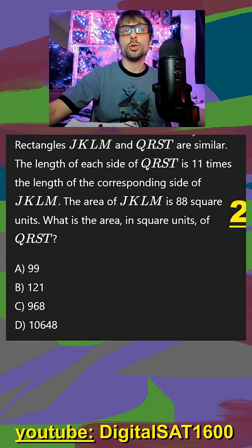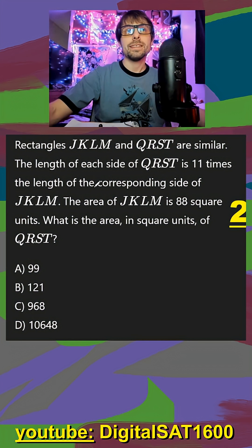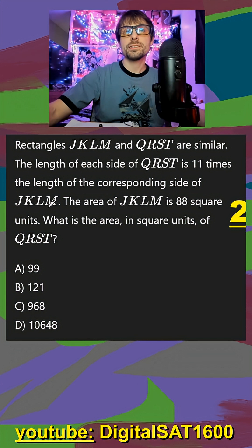Rectangles J and Q are similar. The length of each side of the Q rectangle is 11 times the length of the corresponding side on the J rectangle. The area of the J rectangle is 88 square units. What is the area of the Q rectangle?